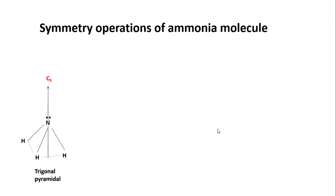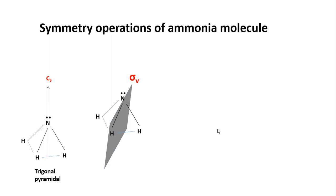Now let us look at the operations. The shape of ammonia molecule is trigonal pyramidal. Nitrogen is at the apex of the pyramid and the three hydrogen atoms form the three corners of the triangular base. The C3 axis passes through the nitrogen atom at the apex. The sigma V plane cuts across the pyramid and contains one NH bond, with one NH bond to the left and one to the right of the plane.